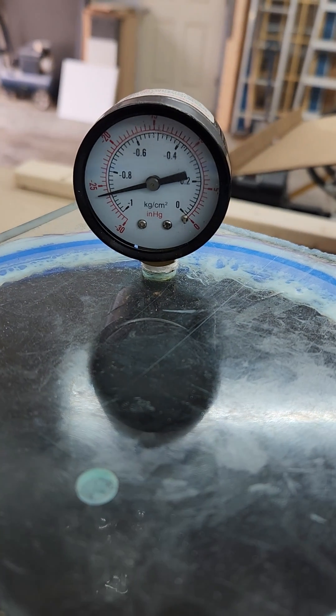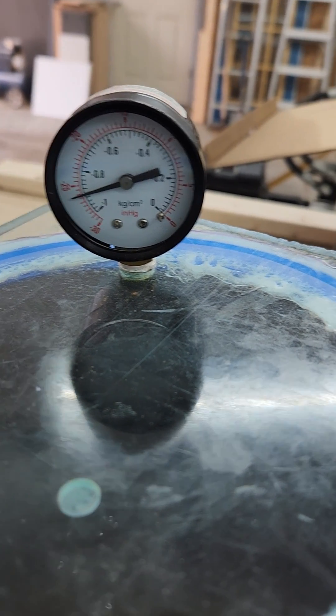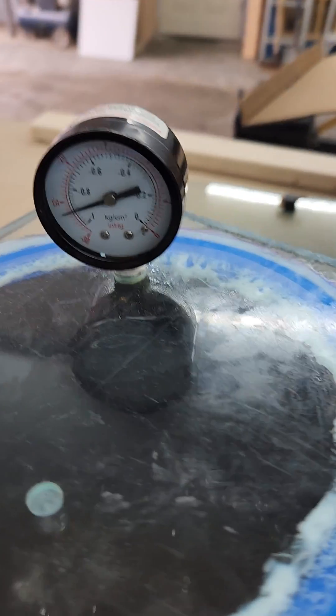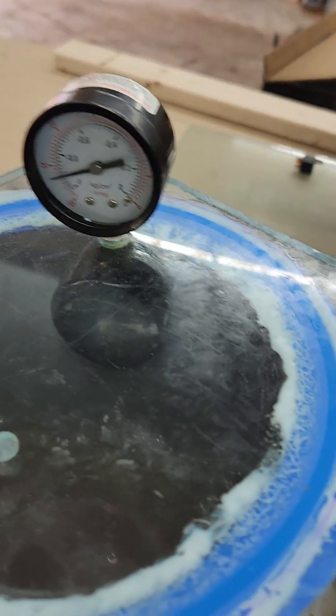Right now you can see I'm running minus 0.9 bar. I'm not sure if you can see it yet, but it's starting to boil. I'll bring you back when it's a little bit warmer. I want to heat it up to about 60 degrees Celsius and this thing clears up real good. Right now it's only about 25 degrees and it's boiling pretty hard already. This is all the moisture coming out.